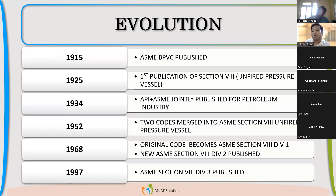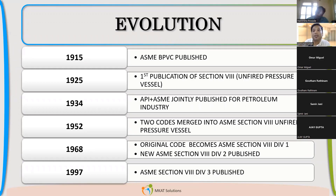So, evolution of the code. In 1915, ASME got started. How did ASME start? Because there were lots of accidents happening in power boilers — that was the first equipment we started using, the steam boilers. Lots of failures happened, and then a committee was formed, mainly the Manufacturers Association involved in manufacturing power boilers and equipment.